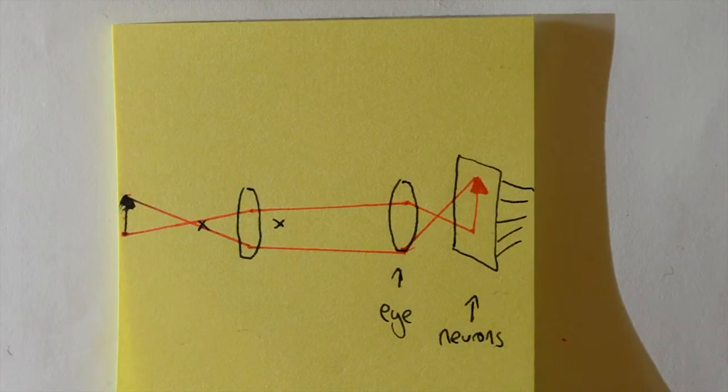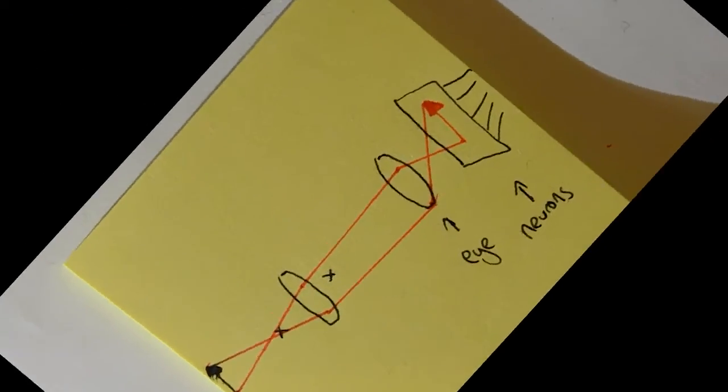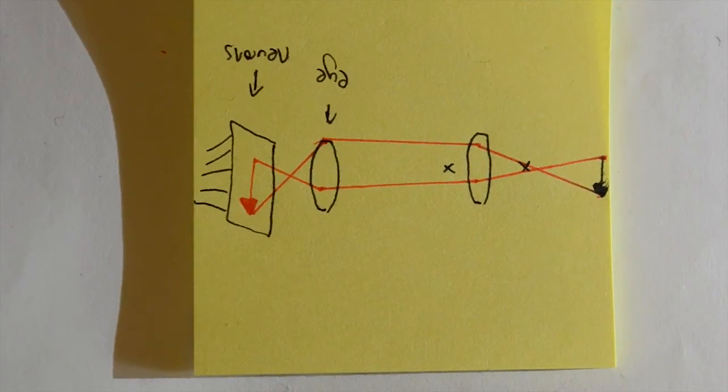But remember, the image on the retina is then flipped around by the brain to make it the right way round. Or in the case of our lens, the wrong way round.